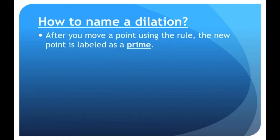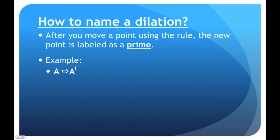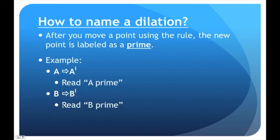So how exactly do we name a dilation? After you move a point using the rule, you name a point by a prime. For example, A becomes A prime — that little mark is called prime, not a one. B becomes B prime, and C becomes C prime.